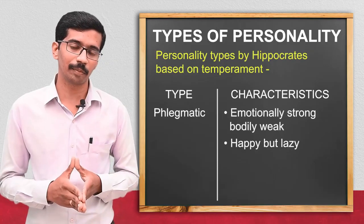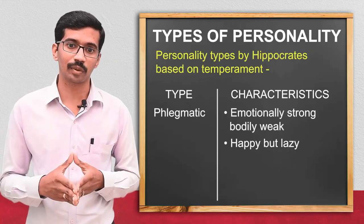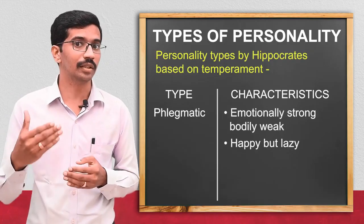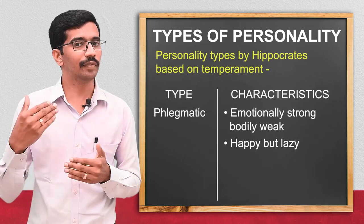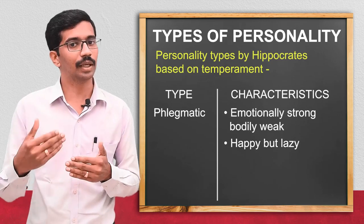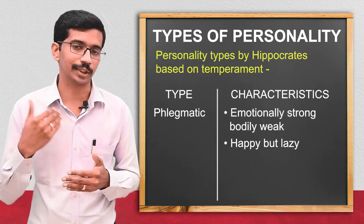Coming to the phlegmatic type: the person is emotionally strong but bodily very weak. He will be very happy but also a very lazy person.